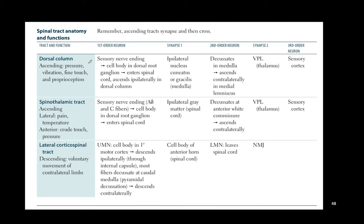The dorsal column is an ascending column carrying pressure, vibration, fine touch, and proprioception from sensory nerves up to the sensory cortex. The first synapse is in the medulla — that first-order neuron has its cell body in the DRG, travels up the spinal cord, and synapses in the medulla. That is a remarkably long neuron — from the tip of your finger all the way to the medulla.